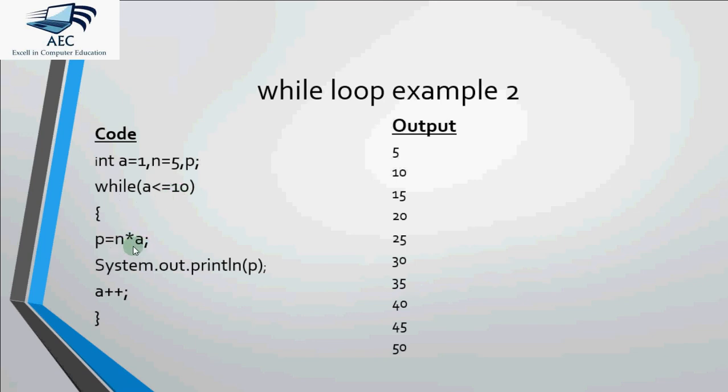So n into a, that is 5 into 1, gives me 5 which gets printed on the screen. a++ will make a 2. And then it goes here, 2 less than equal to 10 is true. n is still 5, a has become 2. So 5 into 2 is 10. p becomes 10 and we print 10 on the screen.